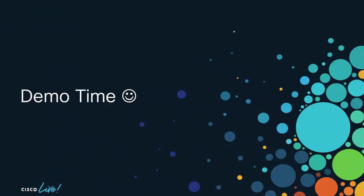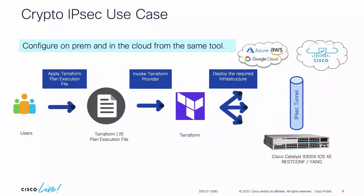Next I'll move into a use case scenario. We're talking about why Terraform is important and why we'd actually want to use it. In this use case, we're talking about crypto IPsec. Here's the typical workflow: first, you apply your Terraform file, which is going to go out and configure an IPsec tunnel. That invokes the Terraform provider and deploys it to the various infrastructure. For crypto IPsec, two main things — we need the crypto and we need the tunnel itself, the one end that's on the device.